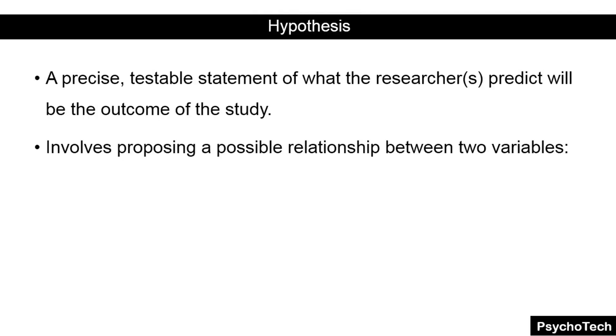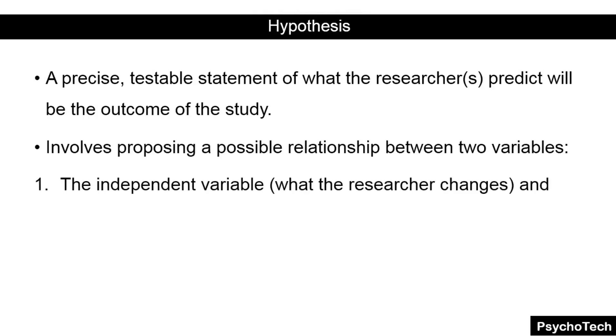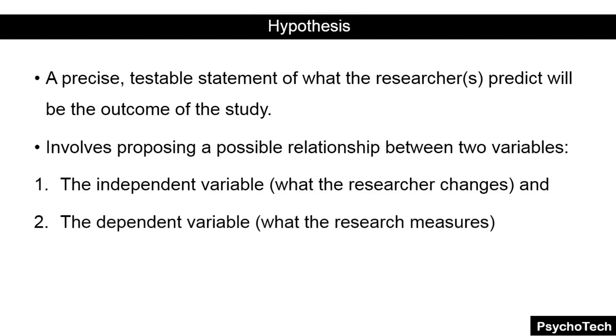What is the difference between independent and dependent variable? The independent variable means what the researcher changes, and the dependent variable means what the researcher measures. Next we have types of hypothesis — generally we have four types of hypothesis.